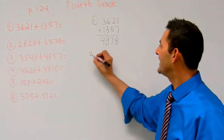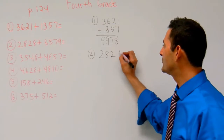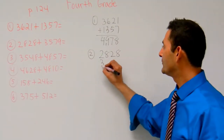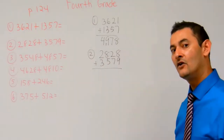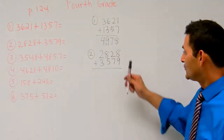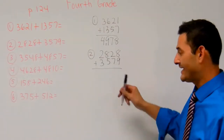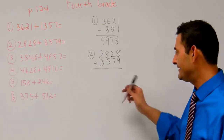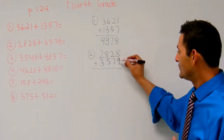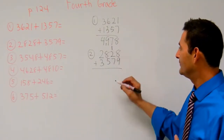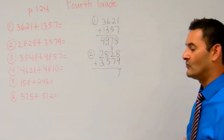Now let's take a look at number 2. Number 2 is 2,828 plus 3,579. Let's go ahead and add this up. So 8 plus 9, that's going to be 17. I can't put 17 there — I can only have a maximum of 9. So I'm going to go ahead and put that 1 there, which is going to be a 10, and leave 7 1's.